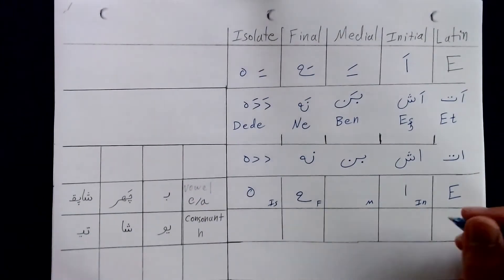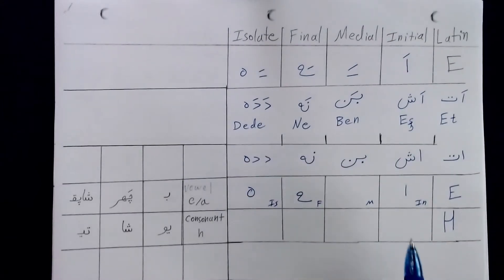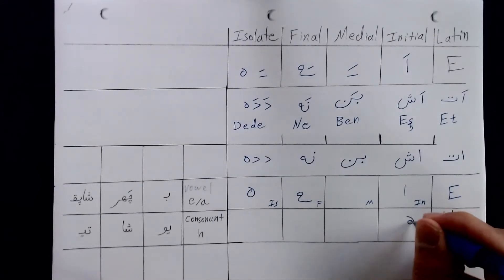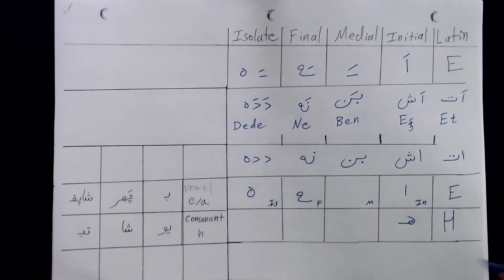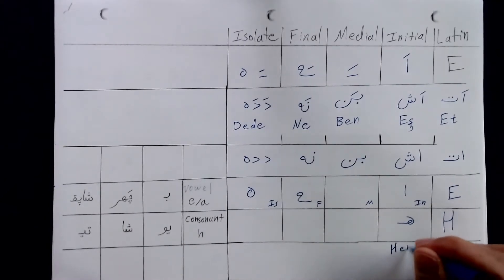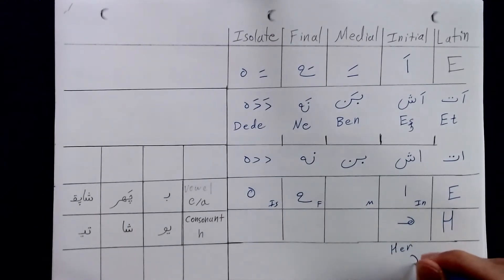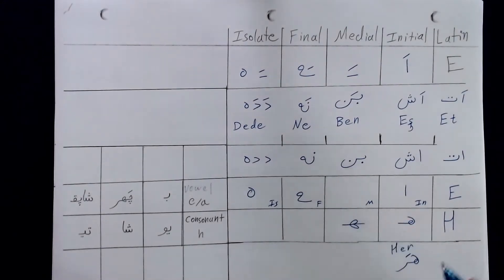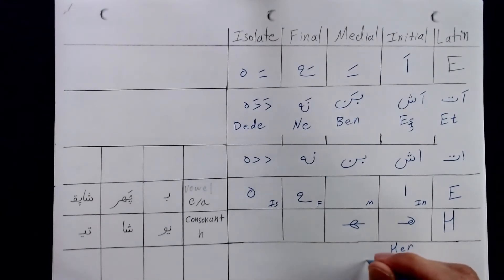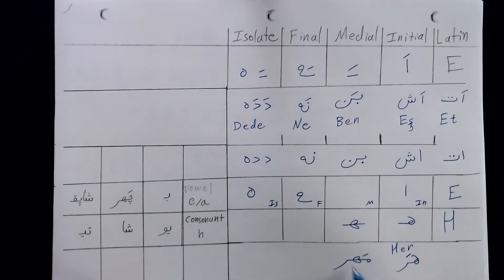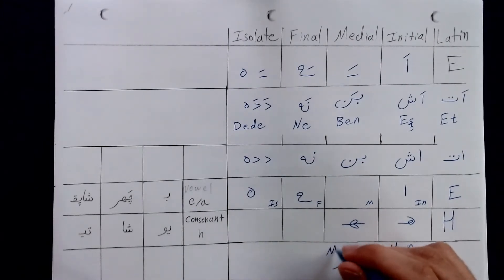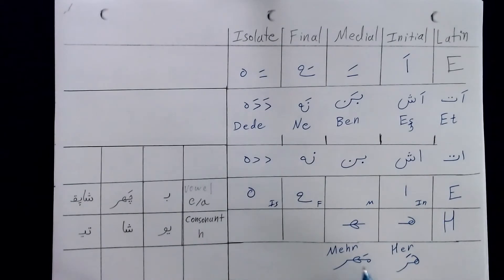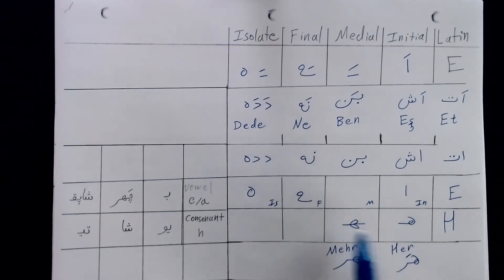It's worth exploring how to write the letter H. In the initial form, we write H using this glyph, as seen in the word H with the Östün. In the medial form, it looks like this, and we can see this in the word Mesh. These will always be read as consonants — H in the initial and medial form always represents the consonant H.